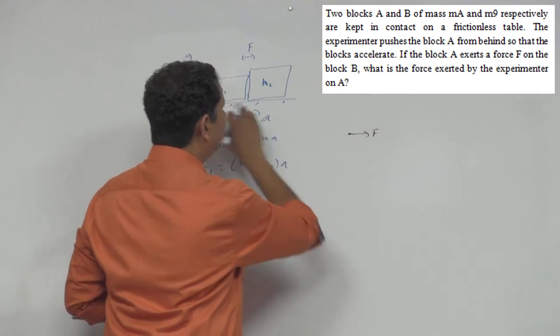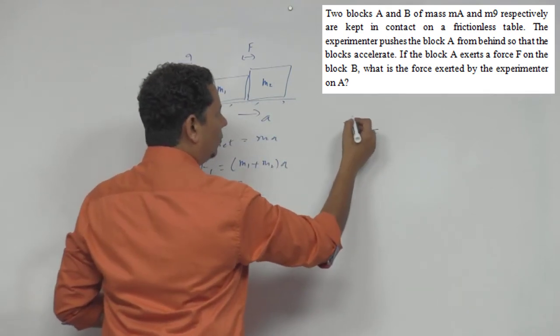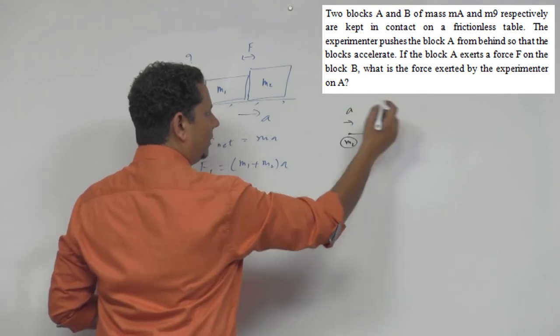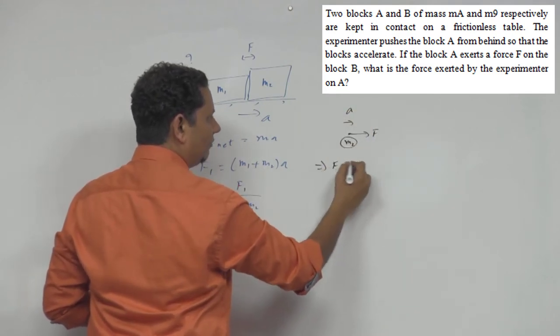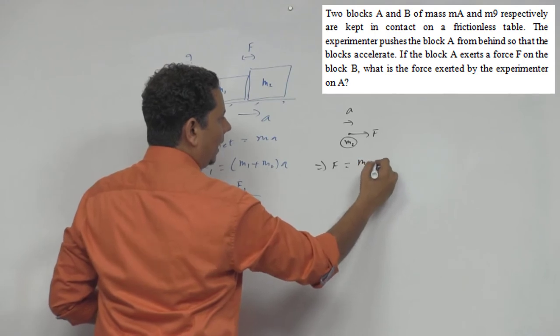To idhar aapka force lag raha F, jo isko dhakka de raha hai, aur yeh pura body mass iska M2 hai, aur yeh puri body aapki acceleration se ja raha hai, which implies F = M2a.